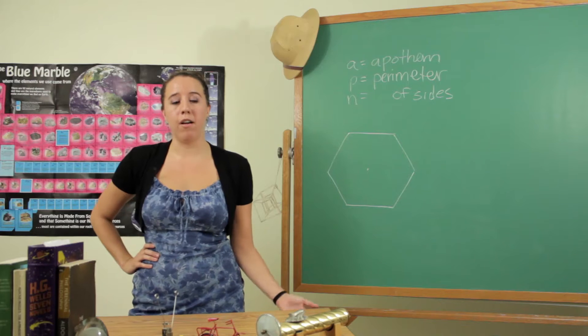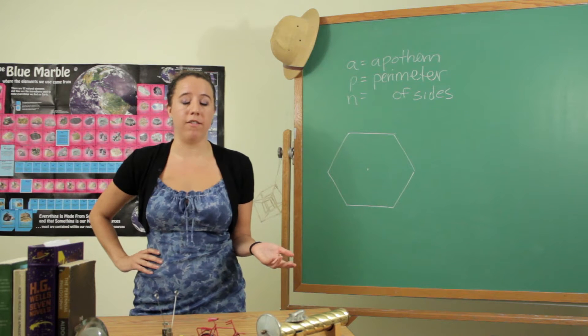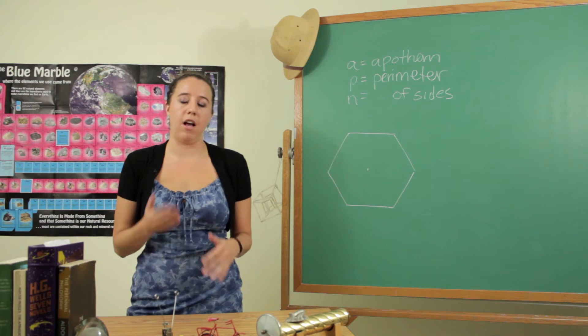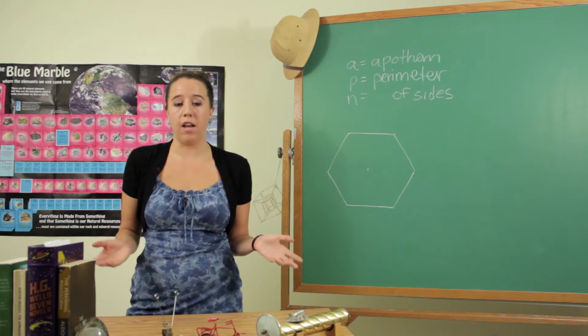With any polygon we're going to use simple geometry to find its area and you're basically just going to break it up into either squares or triangles and calculate all of those areas individually and add them all up.